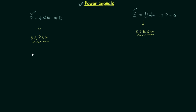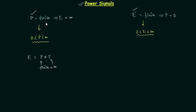Now let's consider what happens to the total energy when average power is finite. We know total energy E equals average power P multiplied by total time. Since P is finite and the average power is computed by integrating |x(t)|² from minus infinity to infinity divided by the total time, that total time is infinity. Multiplying a finite value by infinity gives infinite total energy. So this is the condition for a power signal.